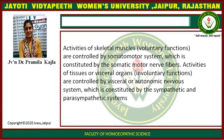Activity of skeletal muscles — that is, voluntary functions — are controlled by the somatomotor system, which is constituted by somatic motor nerve fibers. Activity of tissues or visceral organs — involuntary functions — are controlled by the visceral or autonomic nervous system, which is constituted by the sympathetic and parasympathetic system.